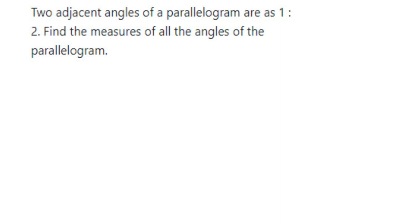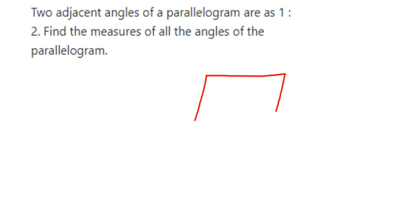Here is a question on parallelogram: two adjacent angles of a parallelogram are in the ratio 1 is to 2. Find the measure of all the angles of the parallelogram. We have been given the ratio of two adjacent angles. Suppose this is a parallelogram — they have not given the angle directly but instead have given the ratio 1 is to 2. We have to find out all four angles.